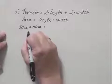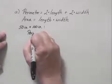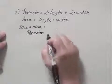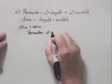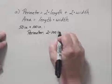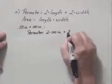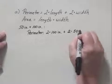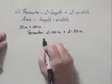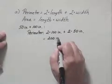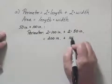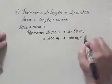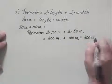We start by finding the perimeter. That's 2 times the length plus 2 times the width, which is 200 inches plus 100 inches, or 300 inches.